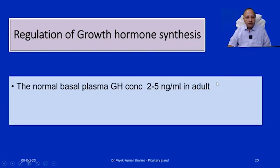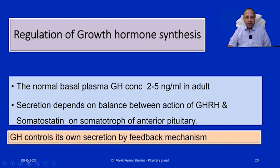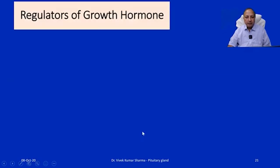Regarding regulation of growth hormone synthesis, the normal basal plasma growth hormone concentration is roughly 2 to 5 nanograms per ml in adults. Secretion depends on growth hormone releasing hormone (GHRH) from the hypothalamus and somatostatin acting on the somatotropes of the anterior pituitary. GHRH stimulates while somatostatin inhibits growth hormone release from somatotropes. Growth hormone also controls its own secretion via a negative feedback mechanism.